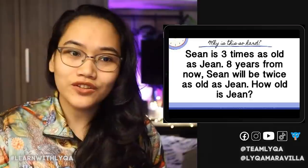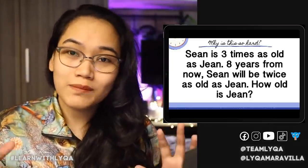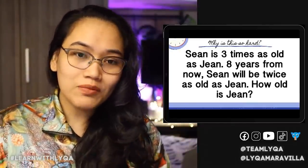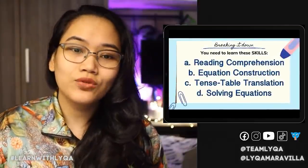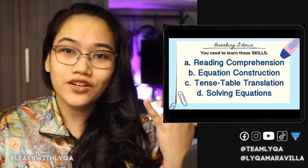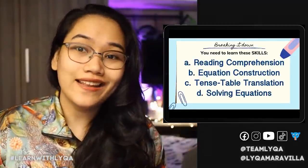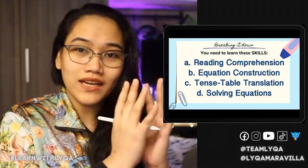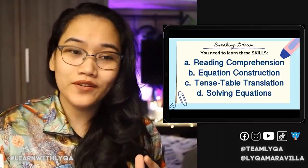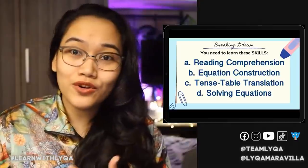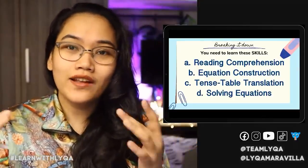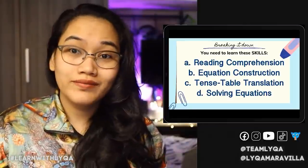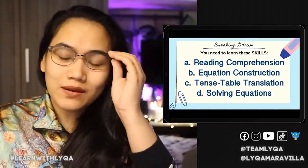If you're young and watching this, you can do it too. This type of problem appears in college entrance exams. Age problems require at least four skills. First: reading comprehension, because the problem is in English. If you're great at math and equations but not at English, word problems become difficult — you can't solve what you don't understand.